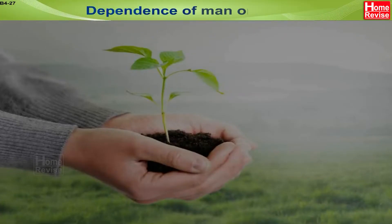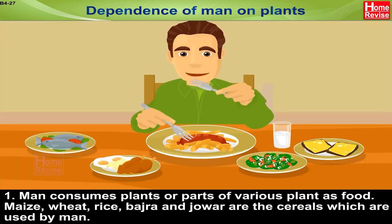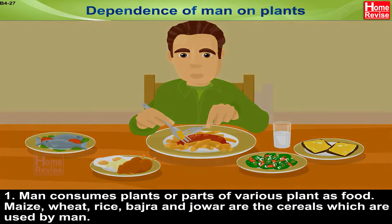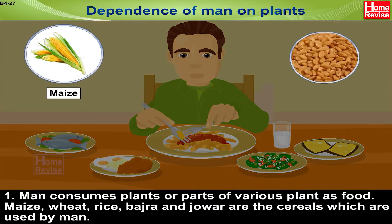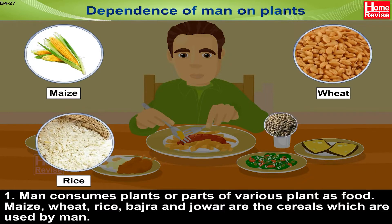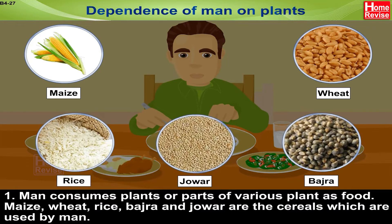Dependence of Man on Plants. Man consumes plants or parts of various plants as food. Maize, Wheat, Rice, Bajra and Jowar are the cereals which are used by man.